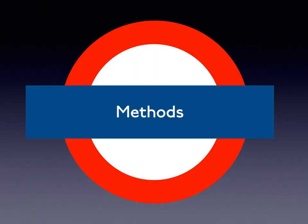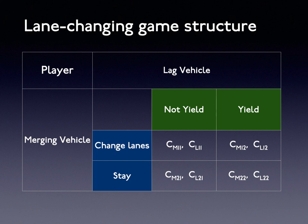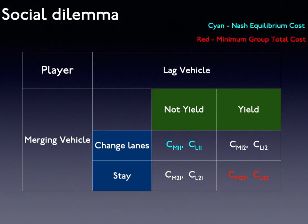As I said in the last video, a payoff table can clearly show the payoffs that players finally obtain at the end of this game. This is a two-player lane-changing game structure. But in some cases, we found Nash Equilibrium tells us the best strategy could be, for example, changing lanes or not yielding, which is not the minimal total cost that is beneficial to both players. We call this case a social dilemma problem when there is a conflict between personal choices and group benefits.